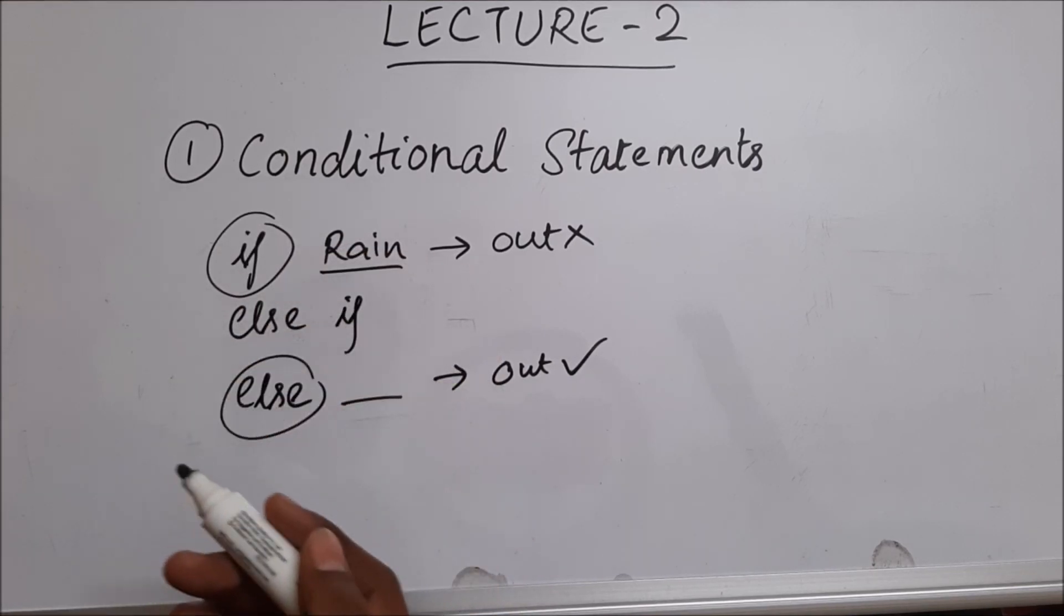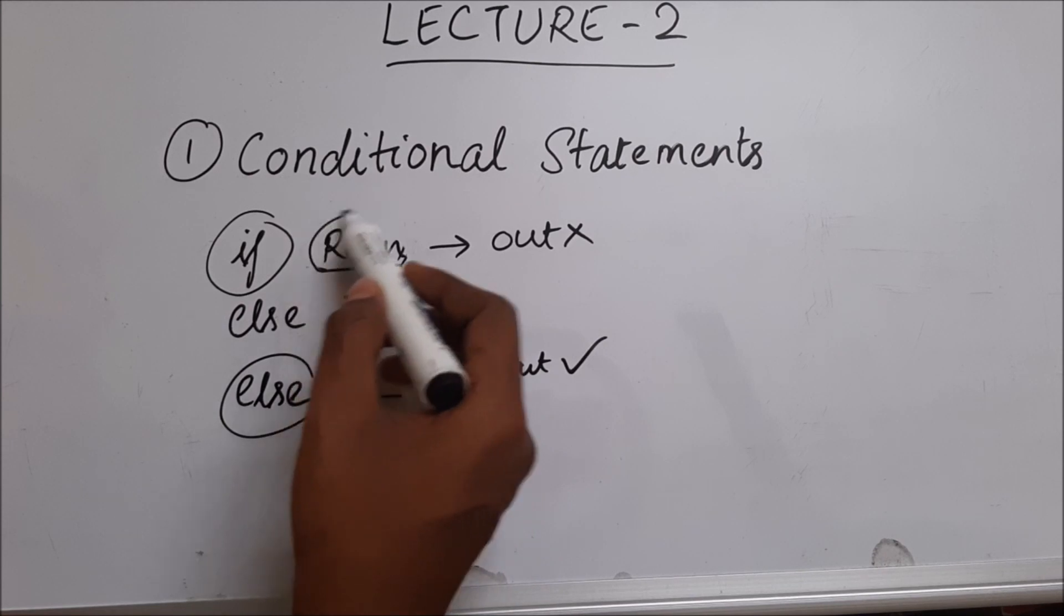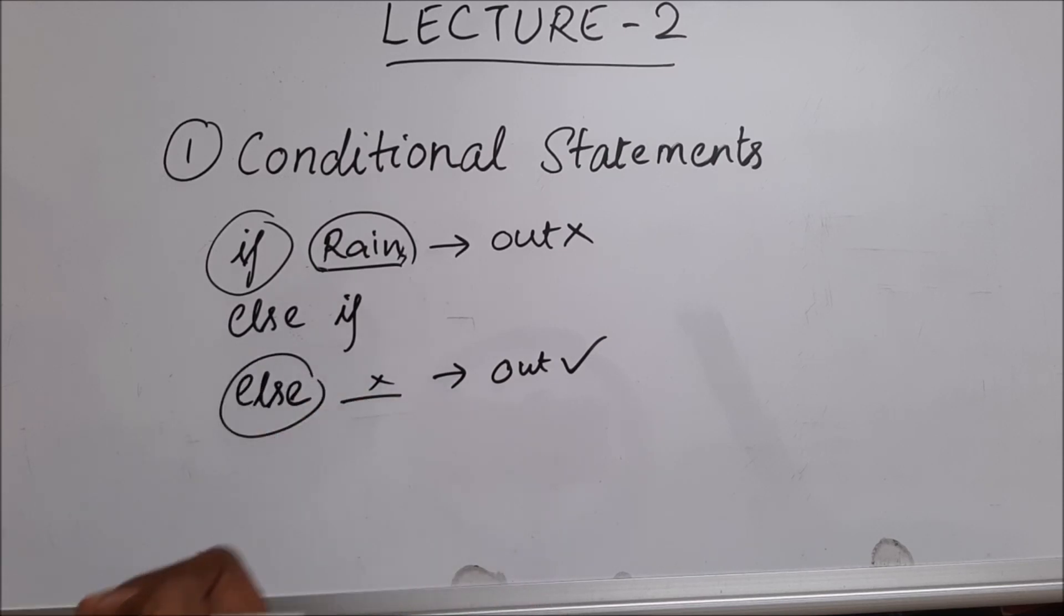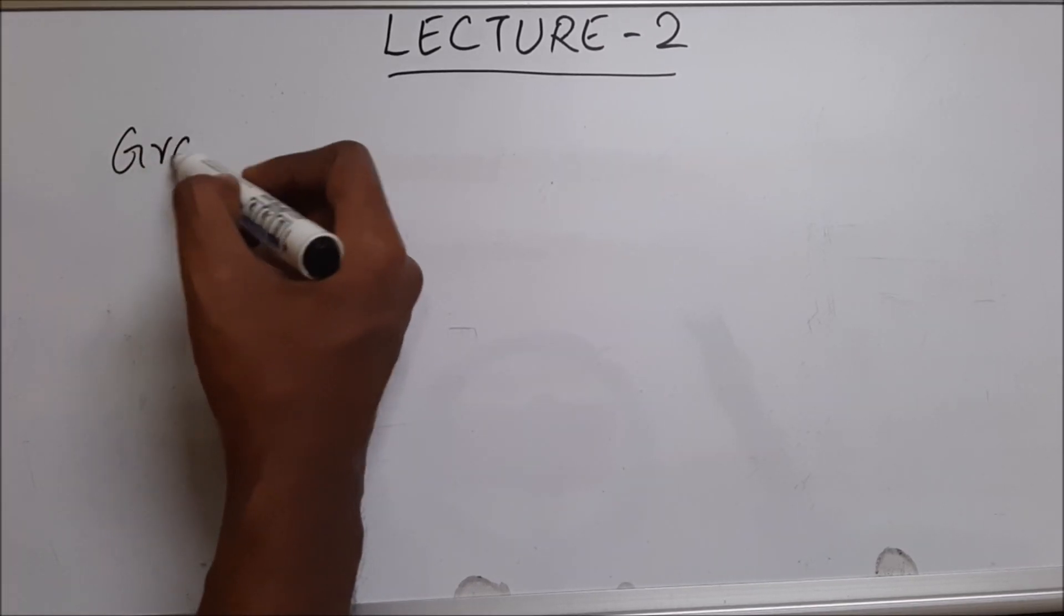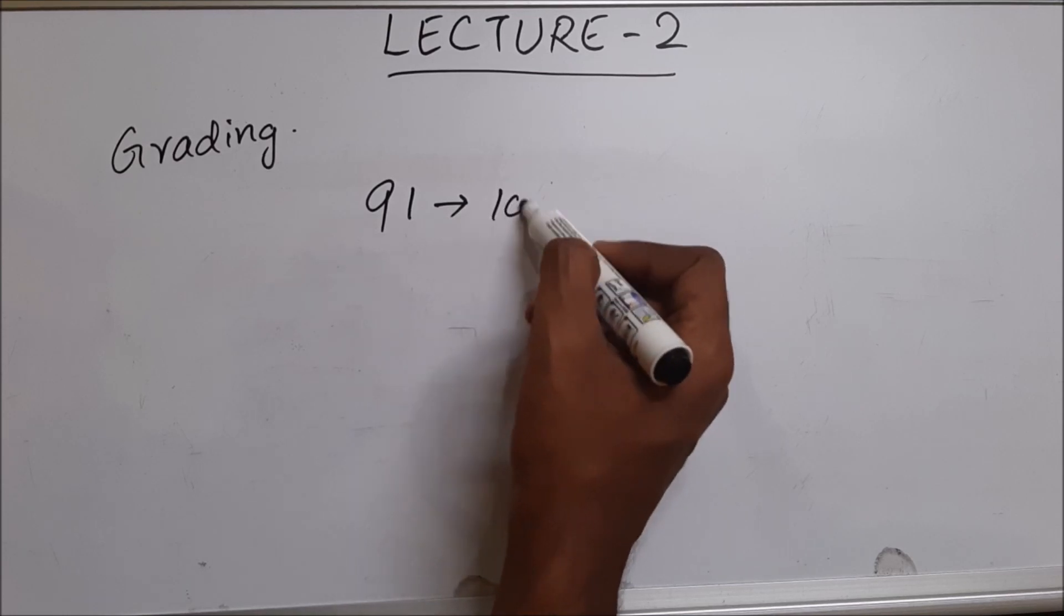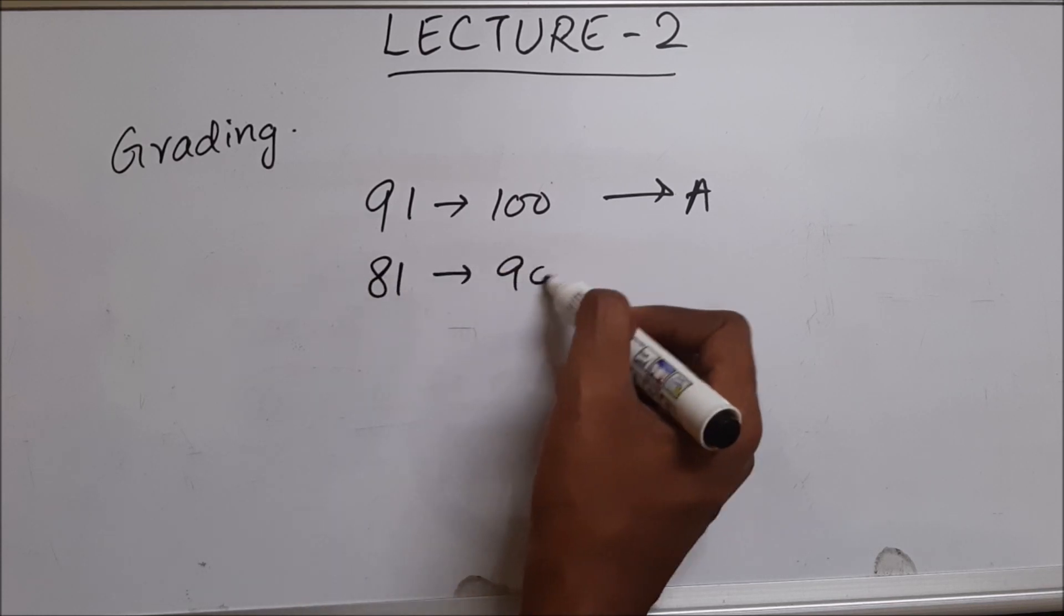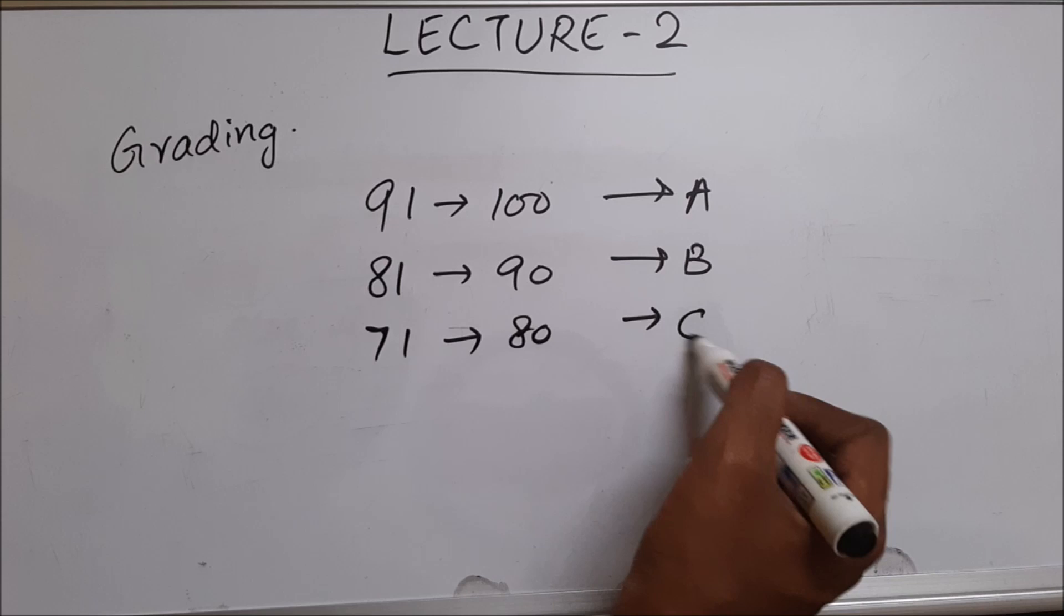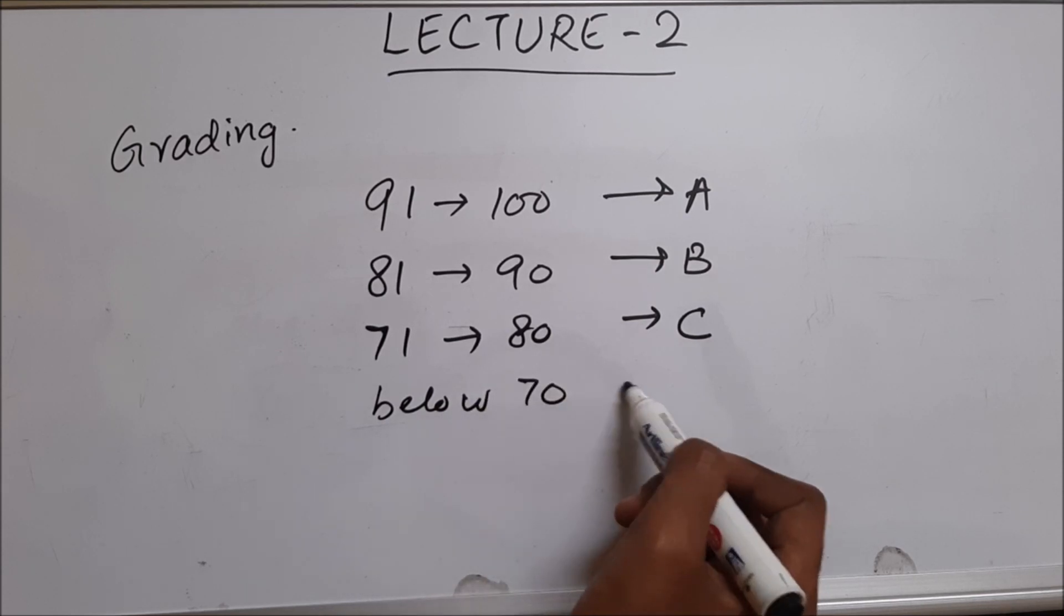So what is else if? Else if is when you have more than two choices. If else is like when you have two choices. Let me give you an example. Let's say you have a grading system for your school. It tells if you score 91 to 100 marks you'll get A, if you get 81 to 90 you'll get grade B, if you get 71 to 80 you'll get grade C, and anything below 70 is D grade.